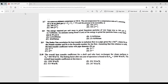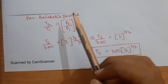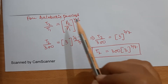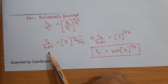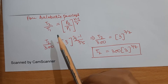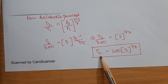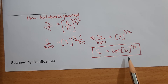Question 2.7: air enters an adiabatic compressor at 300 K. Find the exit temperature for a compression ratio of 3. Using the adiabatic process relation T₂/T₁ = (P₂/P₁)^((γ−1)/γ), with the known compression ratio and γ for air, the exit temperature is T₂ = 300 × 3^(2/7).